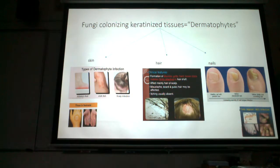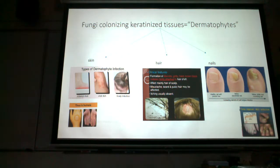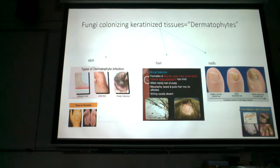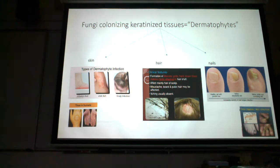Keratin is a really strong protein that provides strength to tissues. Most microbes lack the enzymes to hydrolyze keratin — an enzyme that hydrolyzes keratin is called a keratinase. What makes these fungal pathogens so unusual is that they produce keratinase — they can actually use keratin as a source of food. That's why they infect keratinized tissues: epithelial cells of skin, hair, and nails.